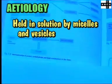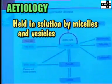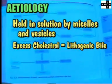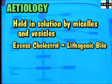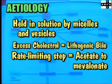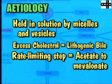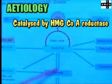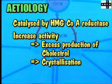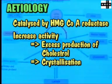Etiology. Cholesterol is held in solution in bile by its association with bile acids and phospholipids in the form of micelles and vesicles. Bile with excessive cholesterol is called lithogenic bile. The rate-limiting step in cholesterol synthesis is the first step in which acetate is converted into mevalonate. This is catalyzed by the enzyme HMG-CoA Reductase. Increased activity of this enzyme results in excess production of cholesterol.